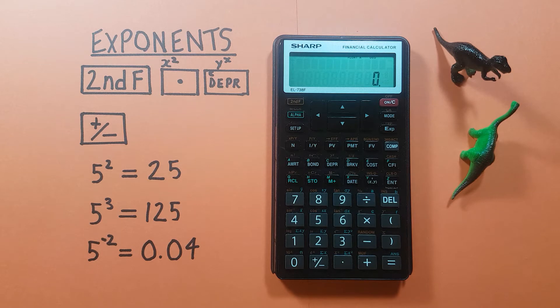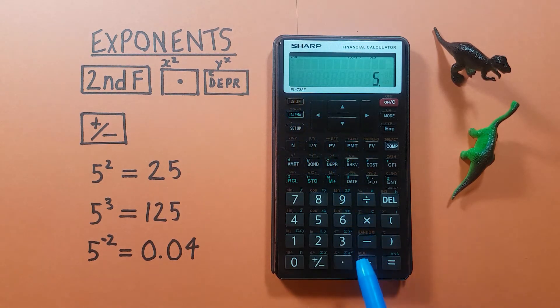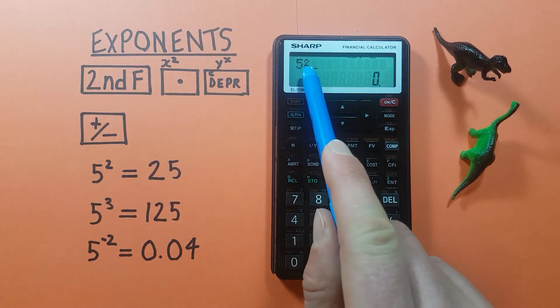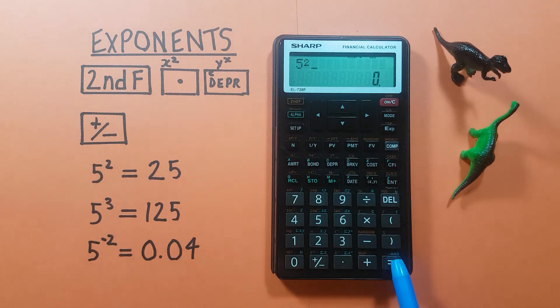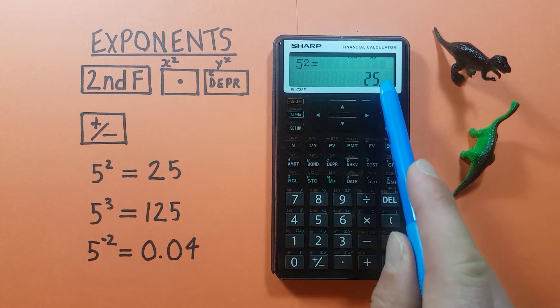Now if we just wanted to square a number like say 5 squared or 5 to the power of 2, we would place the number on the screen then hit the second function key and then the decimal key down here. Now we see 5 squared on our screen, we press equals and we get the result 5 squared equals 25.